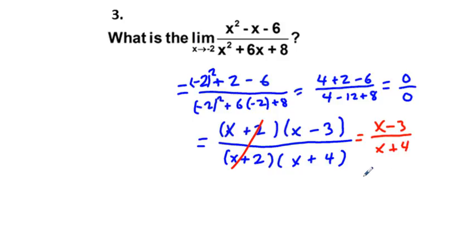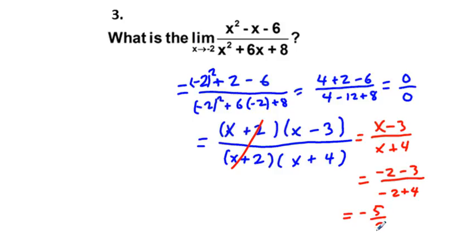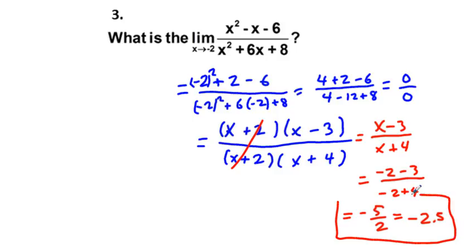Plugging in x equals negative 2, we get negative 2 minus 3 in the numerator and negative 2 plus 4 in the denominator, which simplifies to negative 5 over 2, or negative 2.5. That is our answer for problem three.